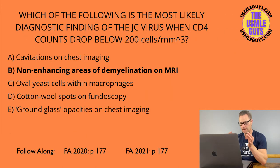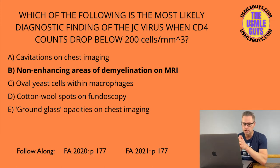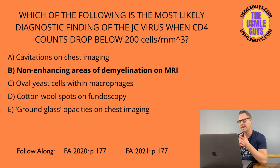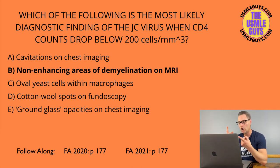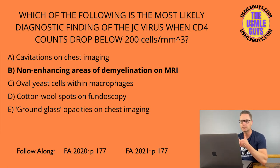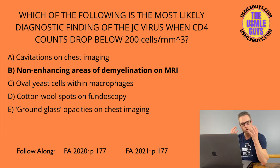The correct answer to the next question is B. Once the CD4 count drops below 200 cells per millimeter cubed, our main concerns are Histoplasma capsulatum, the JC virus, and Pneumocystis jirovecii. Let's look at each one so you know what to watch for on exam day.